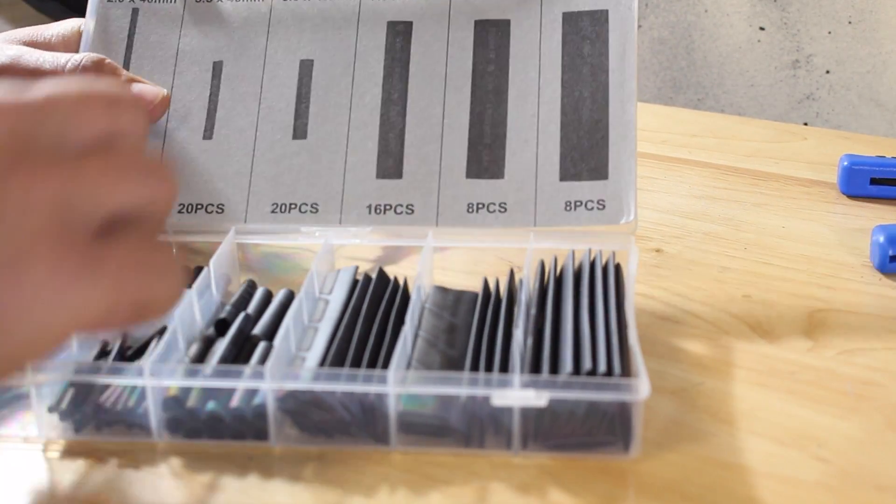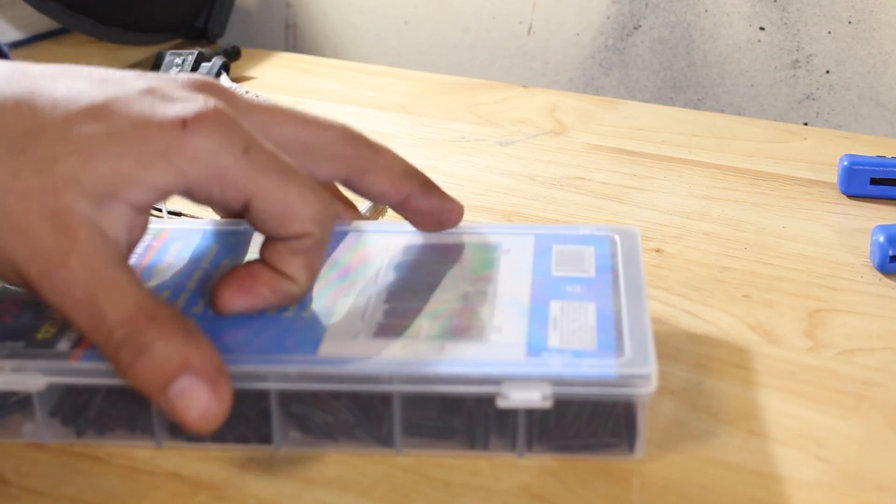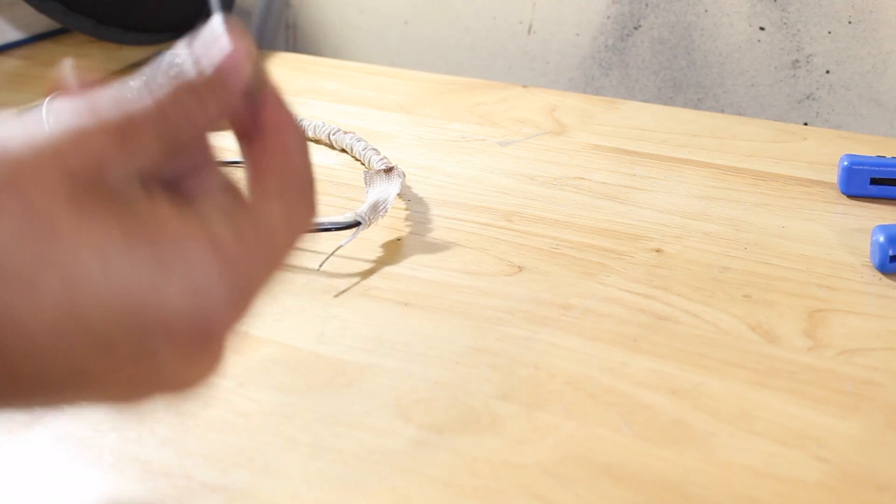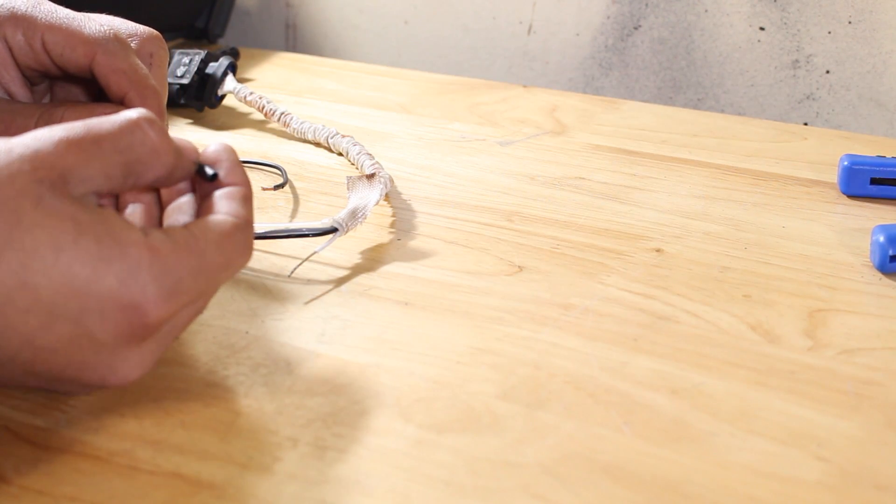Once you've done that, grab your box of shrink wrap and slide 2 pieces onto the wire before you solder the joints together. Remember that you won't be able to put the shrink wrap on the wire after both connections are soldered. Make sure that you select the size of shrink wrap that's big enough to fit over the wire and past the soldered joint.